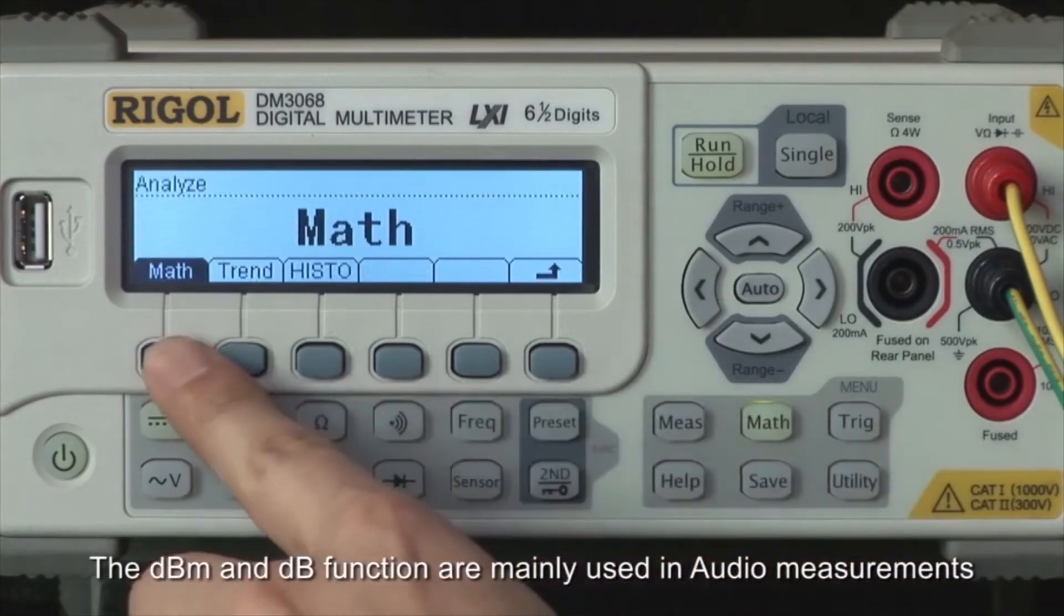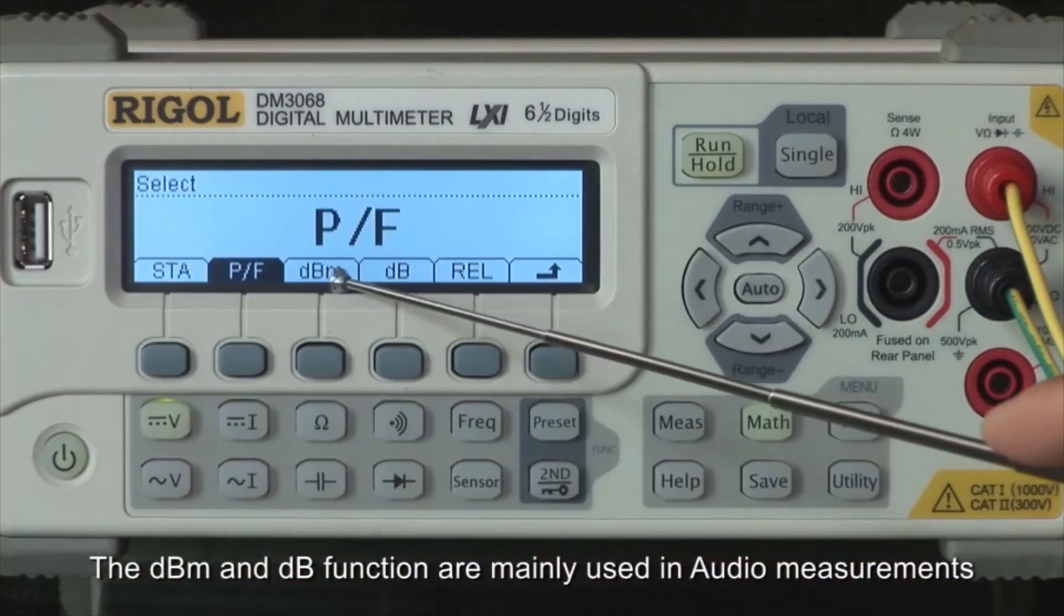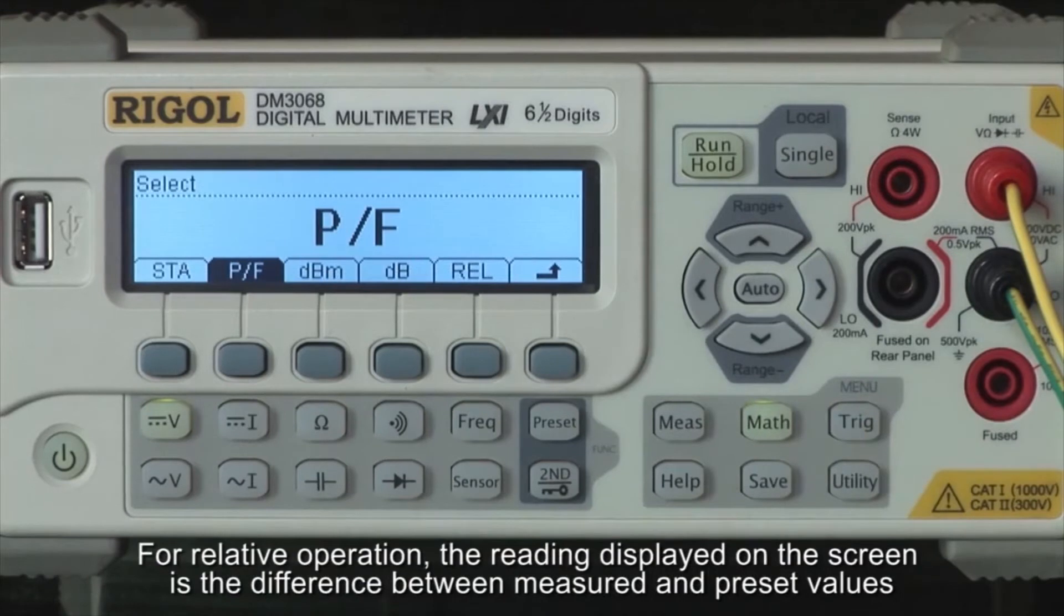The DBM and DB functions are mainly used in audio measurements. For relative operation, the reading displayed on the screen is the difference between the measured and preset values.